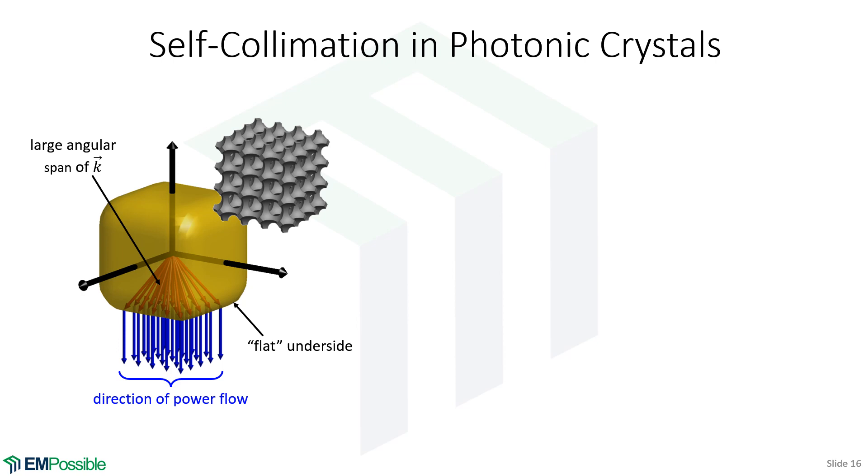And the last phenomenon we'll use as an example is a neat one called self-collimation. Imagine for a second if your index ellipsoid had flat sides. So we'll look at the underside. And these, the span of red arrows, these are all the directions that phase may be trying to take your wave. But since the surface down here is flat, and we draw a tangent to each of those points, the power goes in a straight direction. So no matter what direction phase is trying to take the beam, power is going straight. And here's what a lattice might look like that does that.